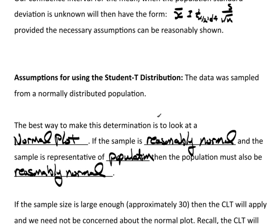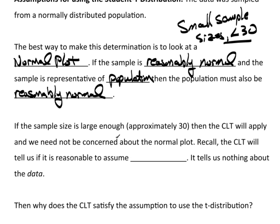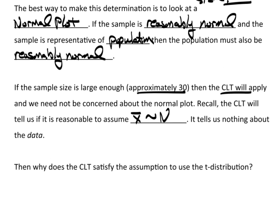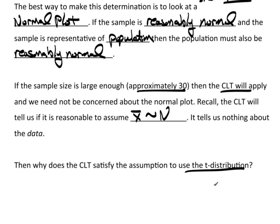So this idea here would apply to small sample sizes, meaning less than 30, because at 30 the sample size is large enough that the central limit theorem is going to apply, and we really don't need to be that concerned about normal plots. Recall, the CLT tells us that x-bar is distributed normal, and it really tells us nothing about the data. Yet I said that the population that we had to sample from must actually be normal. So then why is it that the CLT will satisfy the assumption to use a t-distribution for small samples?